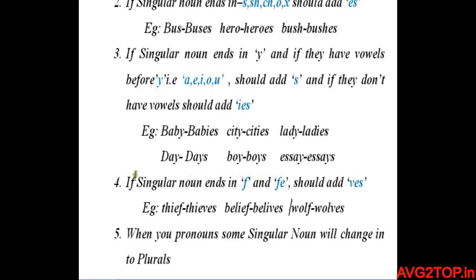The fourth condition: if a singular noun ends in F or FE, you should add VES. For example, 'thief' ends with F, so you add VES — thieves. Similarly, belief becomes believes, and wolf becomes wolves.